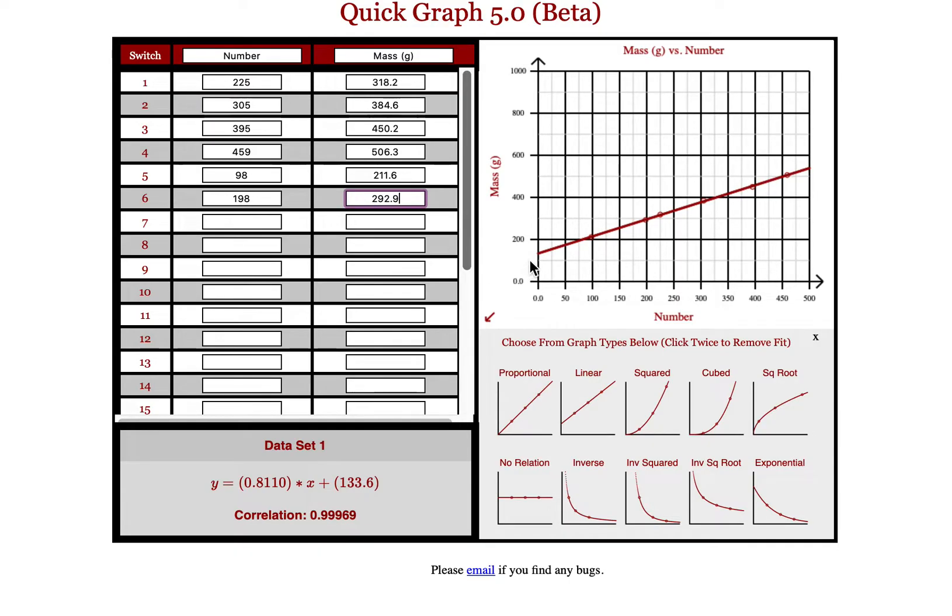And when you plot it out, hopefully you will get a linear graph. It is not a proportional graph because even when you have no pieces of candy, you are still going to have a mass because of the container itself.